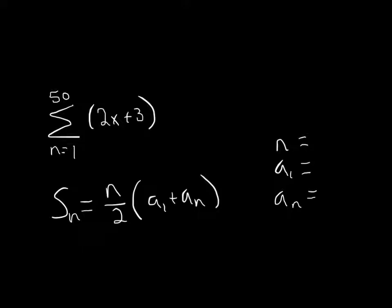Well we know n. n goes from 1 to 50, so there's 50 terms in there. The first term, well how would we find the first term? Well remember this is the explicit formula.